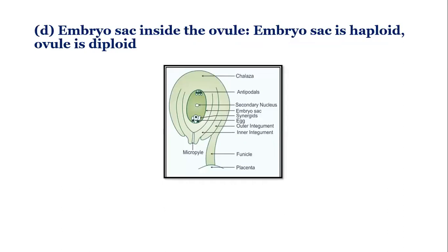Next is the embryo sac inside the ovule. The embryo sac is the female gametophyte present within the ovule. It develops from the haploid functional megaspore and contains the egg cell. The ovule is part of the ovary and is covered by integuments. So here the ovule is diploid — it is a case of one generation within the other: the haploid embryo sac is present within the diploid ovule.